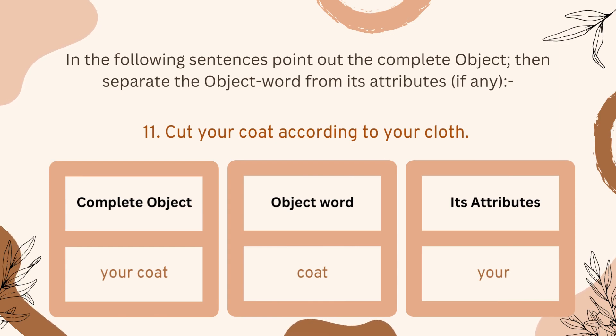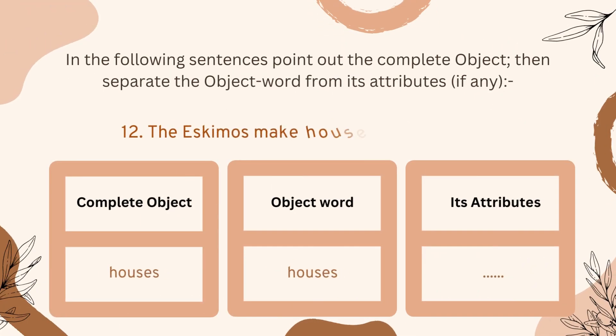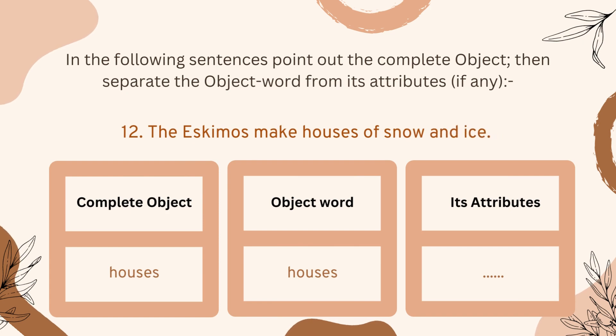Number eleven: 'Cut your coat according to your cloth.' 'Your coat' is the complete object. 'Coat' is the object word, and 'your' is the attribute.